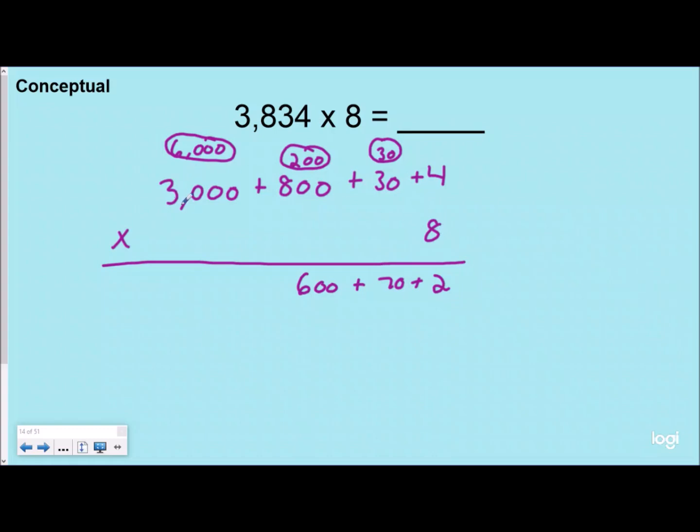So we would basically have to regroup our 30,000 over here if we were doing this kind of conceptually, which means we have nothing left here. And then 8 times 0 would be 0 plus 30 would be 30,000.